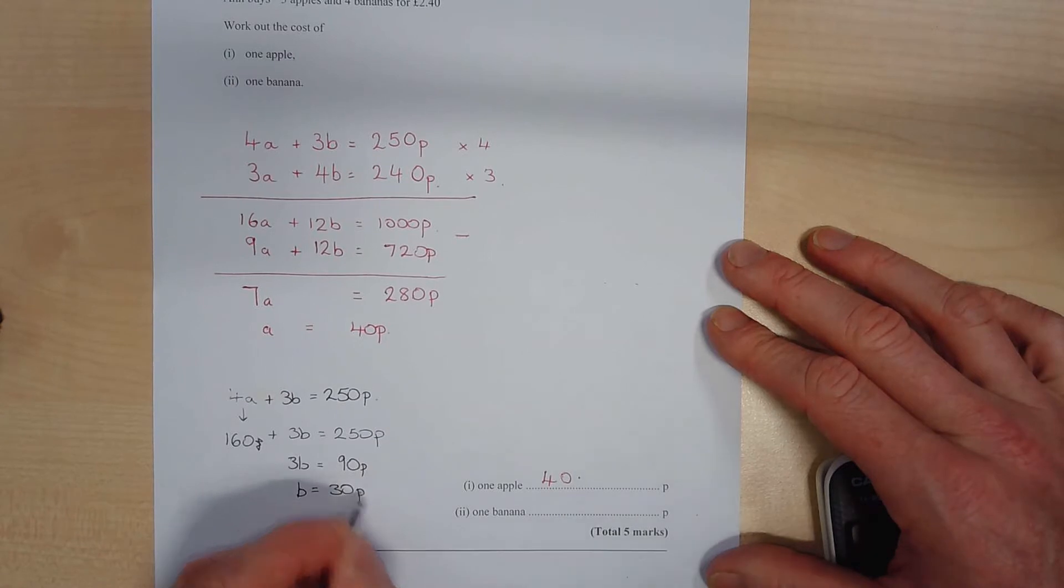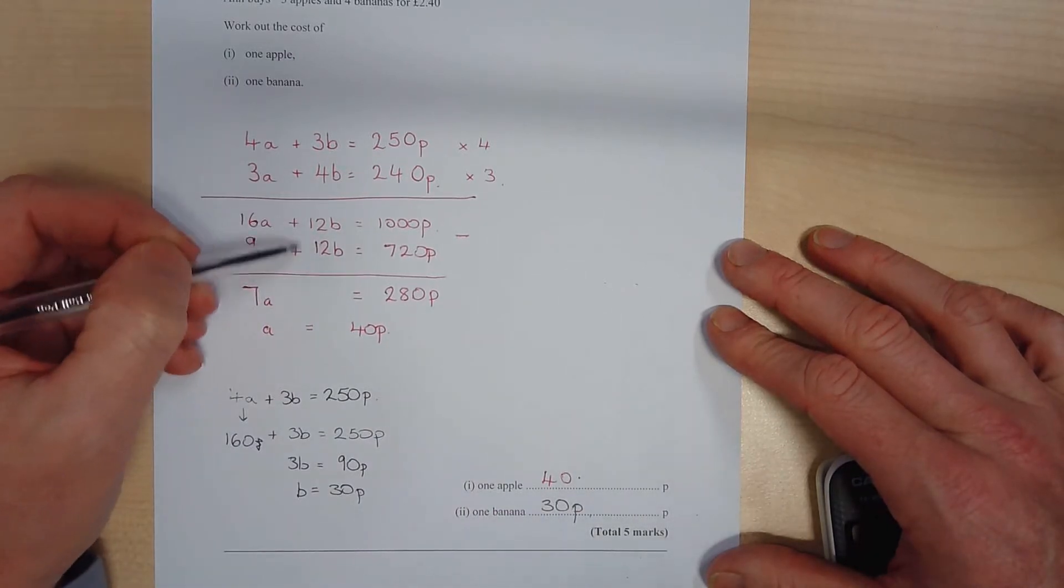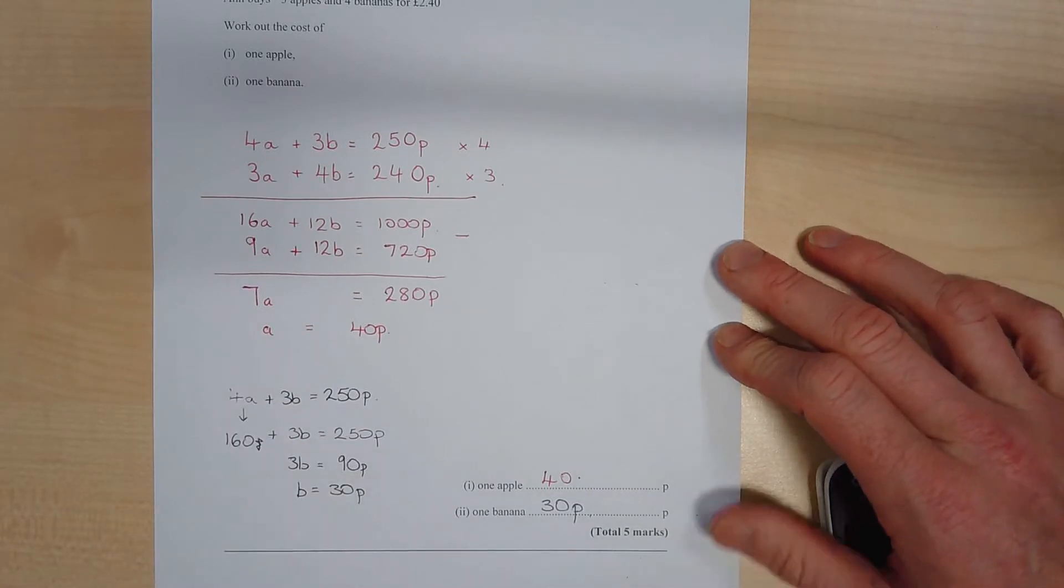Okay, so using that information from earlier, take away 160p is 90p. So one banana must have been 30p. Okay.